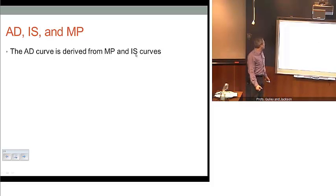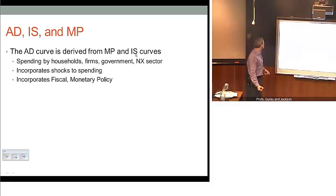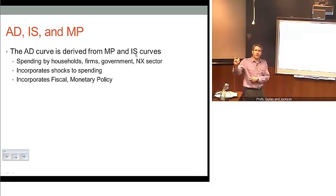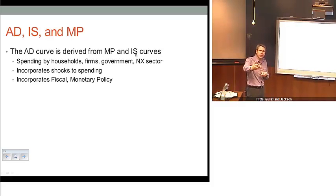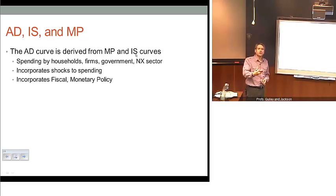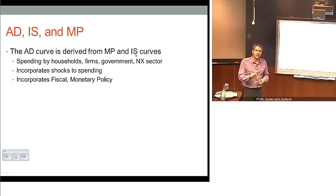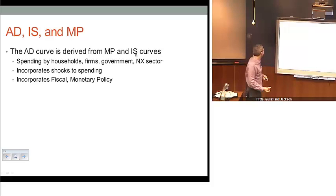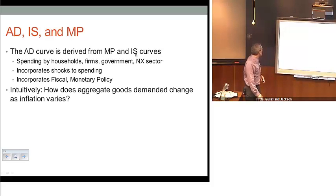The IS and MP curves are going to be integral to our understanding of the aggregate demand curve. When we put all these pieces together, we have on the household side, the firm side, the government side, and the net export side — all spending by all those different sectors of the economy. It incorporates shocks in those various sectors as well, and more importantly, it allows us to understand and explain in a basic way fiscal and monetary policy.